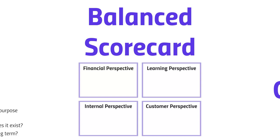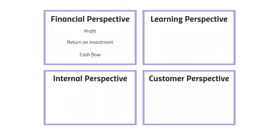Starting with finance: even with the balanced scorecard, we still need to look at this because finance is very important. As a listed for-profit company, KCTP must generate profit and provide a return to shareholders. Its net profit margin is over 30%, which is very high. Return on investment is also important — KCTP has over $6 billion in fixed assets. Cash flow is another key measure, looking at your day-to-day, week-to-week incomings versus outgoings.